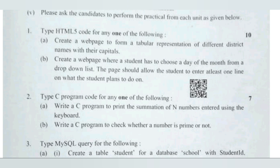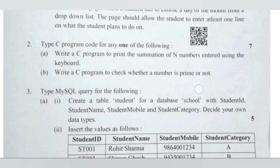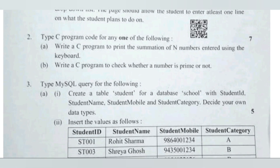Question two: type a C program code for any one of the following. Question A: write a C program to print the summation of N numbers entered using the keyboard — here we can use a for loop and one more variable called sum, then add each number. Question B: write a C program to check whether a number is prime or not.